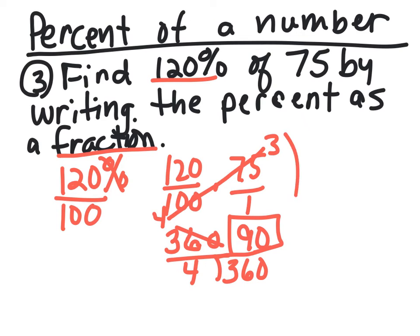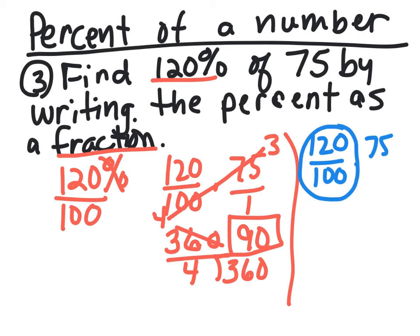There's another way to do this. If I said 120% of 75, I can actually simplify this fraction in the very beginning and get that to 6/5, then multiply it times 75.